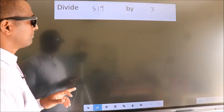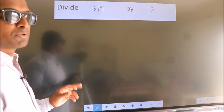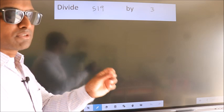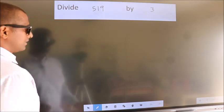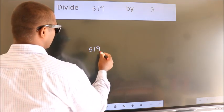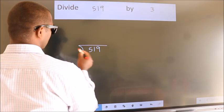Divide 519 by 3. To do this division, we should frame it in this way: 519 here, 3 here.